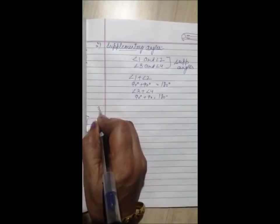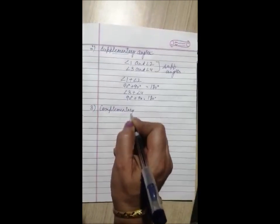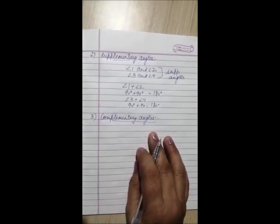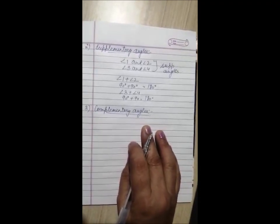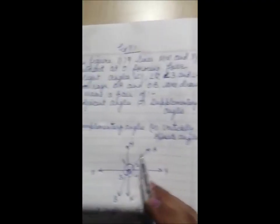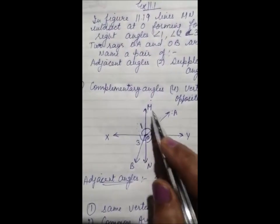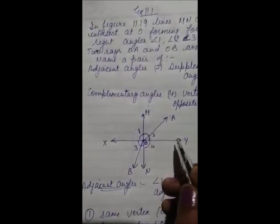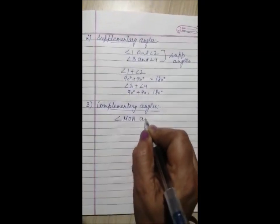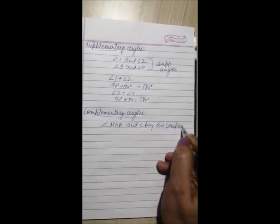Next, complementary angles. The sum of complementary angles is 90 degrees. See in this figure: angle MOA and angle AOY are both 90 degrees combined. Angles MOA and AOY are complementary angles.